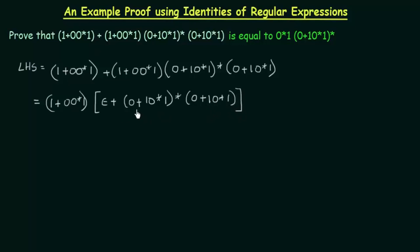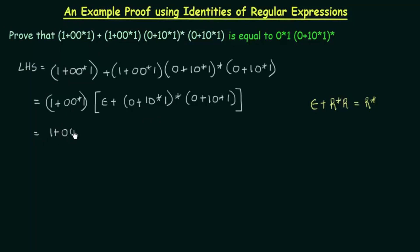Now if you look at this expression, you see that these two terms are the same: (0 + 1·0*·1)* and (0 + 1·0*·1), with a star on one of them. Recalling the identity we have studied — ε + r*·r = r* — if we consider (0 + 1·0*·1) as r, this whole thing can be replaced by (0 + 1·0*·1)*.